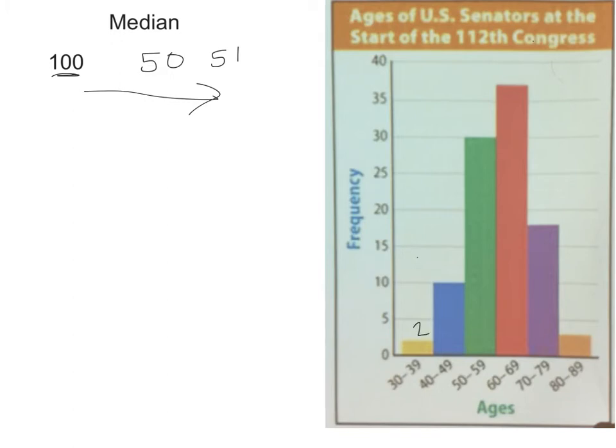There are two people in this age group, 10 in this one, 30 in this one. So between these, we have a total of 42. Here there are 3 and 18, which means from here there's a total of 21, which means that our median is going to fall somewhere in here, probably closer to that side than it is to this side, but it's going to be somewhere in that 60 to 69 age group.